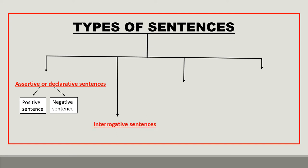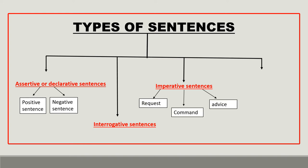Second, we are going to talk about interrogative sentences — they ask questions. Third, we are going to talk about imperative sentences. These sentences express a request, a command, or an advice. And lastly, we are going to talk about exclamatory sentences, which talk about strong feelings.